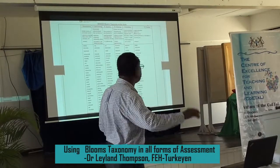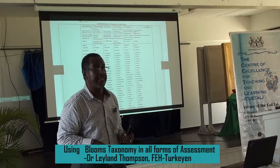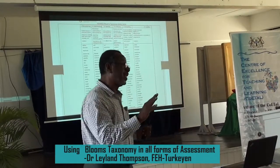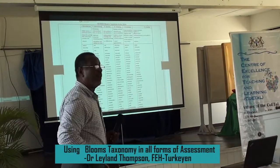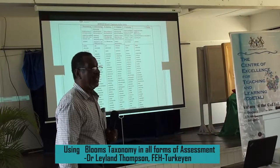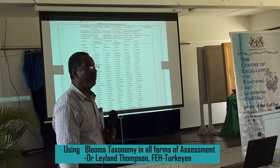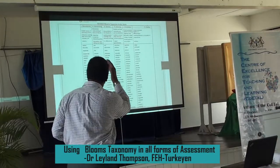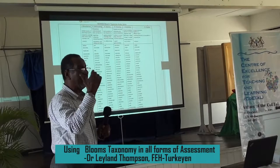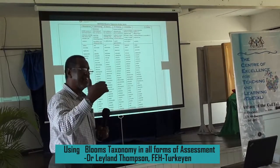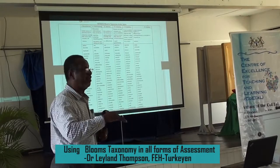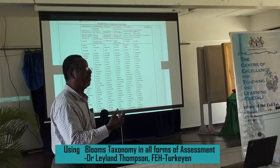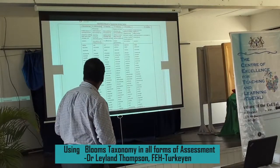In a university, we can use all six levels — there's no reason not to. In primary school, it might go up to application. But at university, all six can be used. There are many verb lists available, and I'll send you a slide. Nowadays, you just look up what verbs are available for a particular cognitive level. When you write your objective, it will have one of these verbs to identify which level it belongs to.